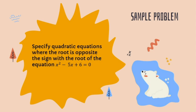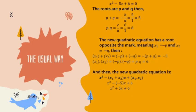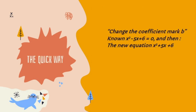To better understand quadratic equations and functions, here is an example problem. Problem one: specify the quadratic equation whose roots are the opposites of the roots of the equation x² − 5x + 6 = 0. To solve this, I will describe the usual way and the quick way. For the usual way, we find the sum and product of the roots first, then substitute them into the new quadratic equation formula, giving x² + 5x + 6 = 0. For the quick way, simply change the sign of coefficient b.